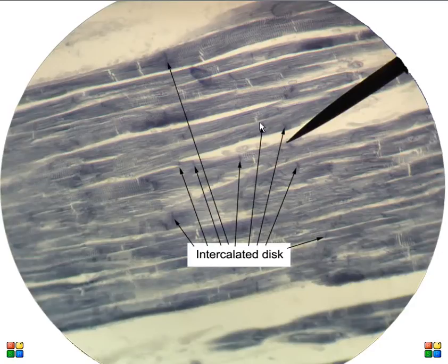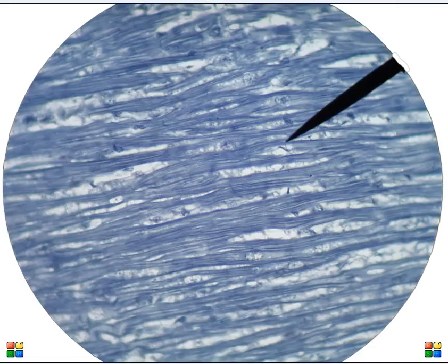There are a lot of arrows here going to various intercalated discs. So again, this is basic cardiac muscle. I'm going to keep clicking because there are other pictures also of cardiac muscle.